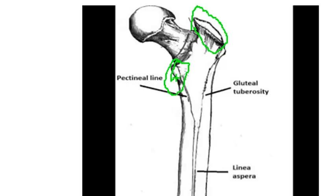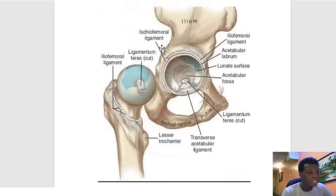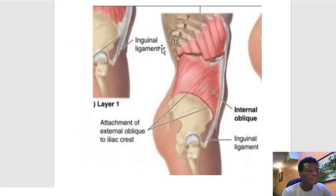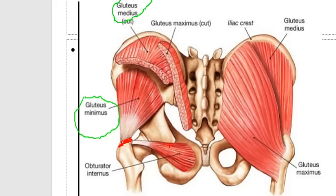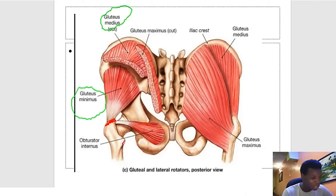The lesser trochanter is the projection below the greater trochanter. For muscles inserting on the greater trochanter: gluteus minimus and gluteus medius are very important abductors of the hip. They take their origin from the iliac crest and eventually insert on the greater trochanter. We also have the obturator internus and other rotators of the hip inserting on the greater trochanter.